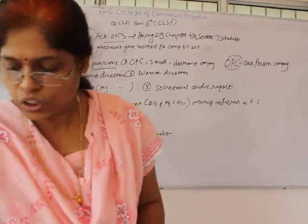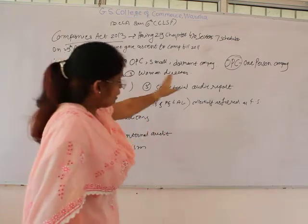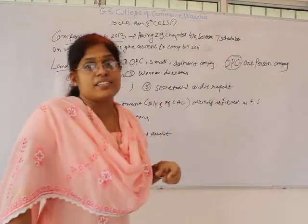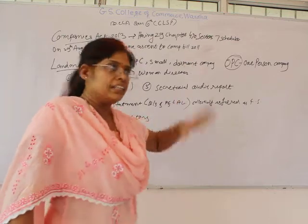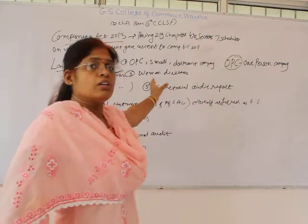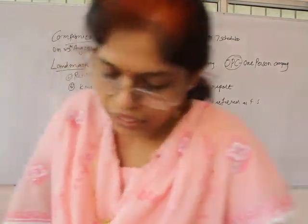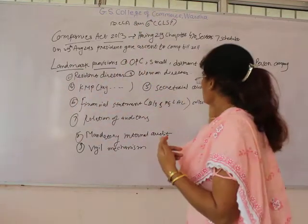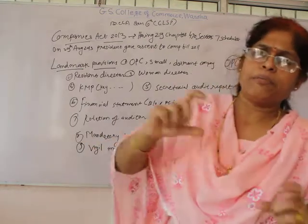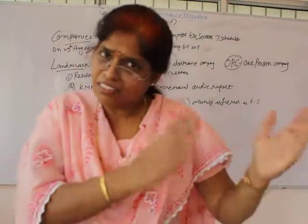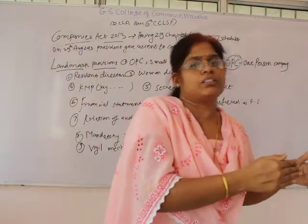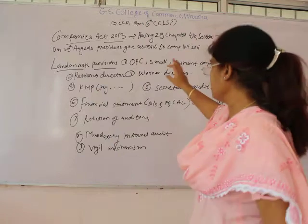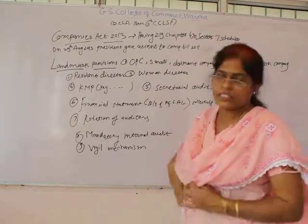A small or dormant company means even a single individual can handle the business activity, but he must be an Indian citizen or a resident of India — that is the main rule for opening a One Person Company. The maximum limit for members in this OPC, small, or dormant company may vary from 50 to 200 members. Similar provisions are mentioned for different kinds of companies such as public company and private company, which we will see later.